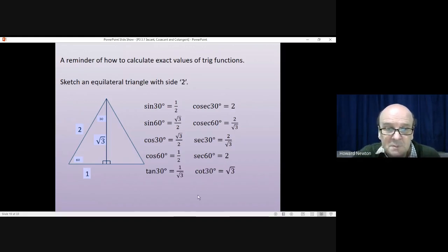Tan 30, opposite over adjacent, which is 1 over root 3. Cot 30 will be 1 divided by that, which is root 3. And tan 60 is root 3 over 1, which is root 3. And cot will be 1 divided by root 3.